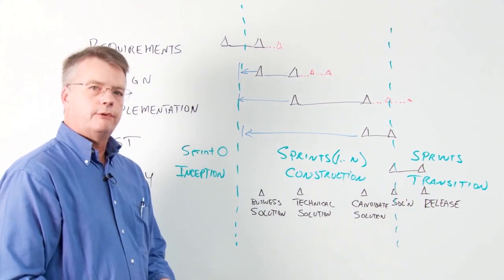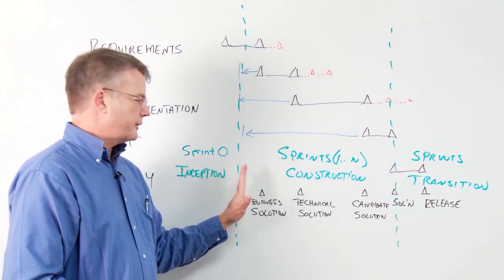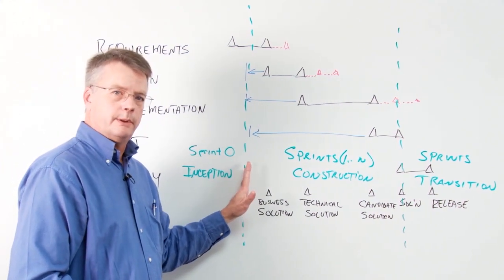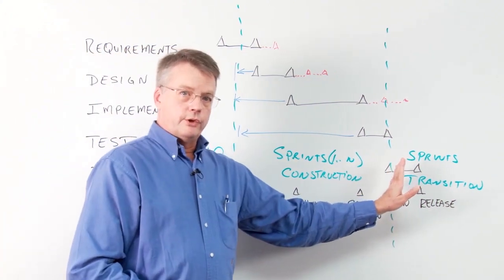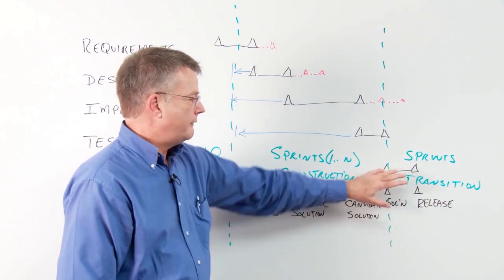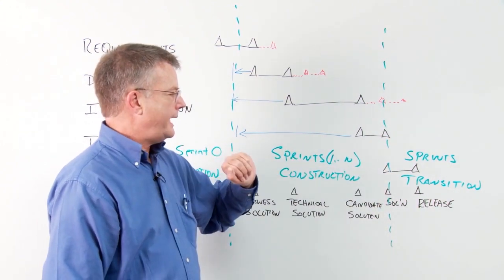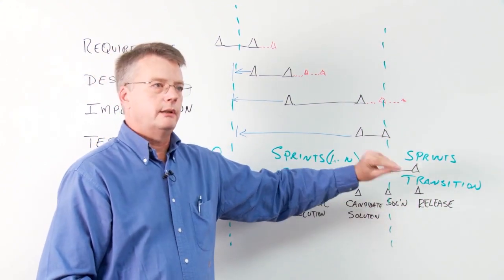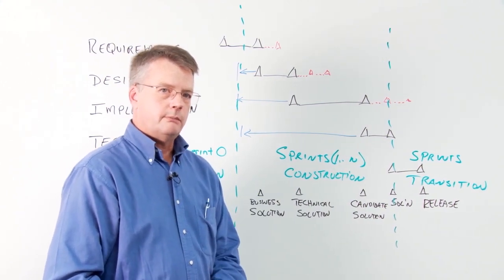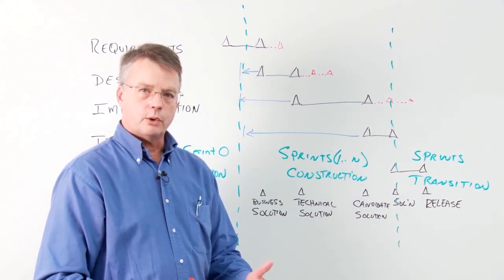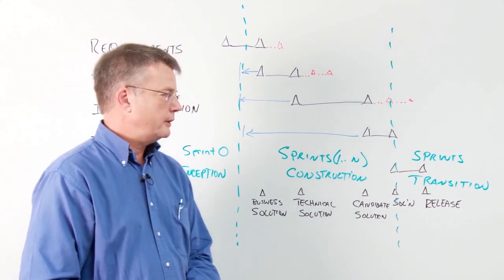And the key milestones we're looking for is initial scope of our system, so we know what it is we're going to build, and that we can get funding for it. We have a solution we're happy with. And then finally, we have a release that's in the hands, and the users have been trained on it, and any other activities that may need to be gone through, such as formal acceptance testing by the users.